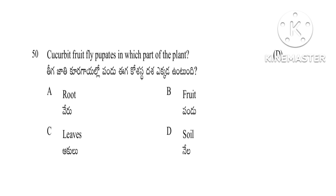Question 49/50: Cucurbit fruit fly pupates in which part of the plant — roots, fruits, leaves, or soil. The answer is soil. Cucurbit fruit fly undergoes pupation in the soil. This completes part 1 covering questions 1 to 50. The next video, part 2, will discuss another 50 questions with answers.